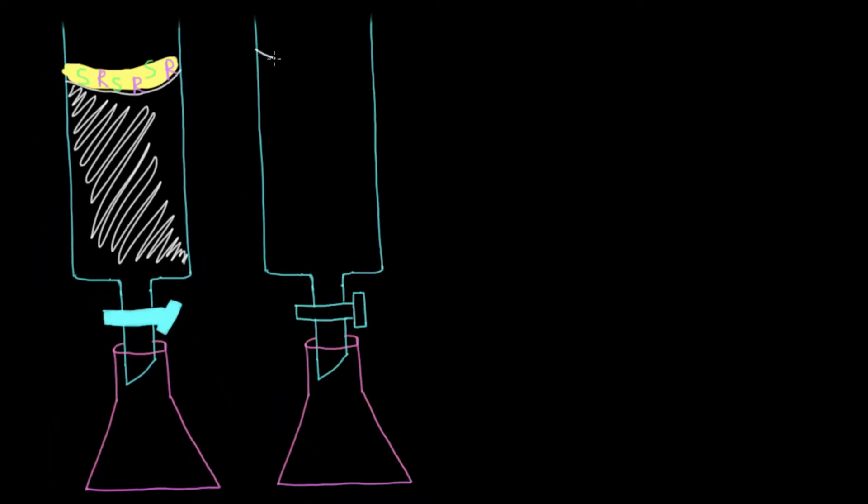And as this moves through the stationary phase, so once you open up the stopcock, what you'll see is that if the R enantiomer was the one that binds tightly to the stationary phase, it won't move very quickly. But with the S enantiomer, it might be racing through since it's not really interacting that much with the stationary phase and prefers to interact with the mobile phase.